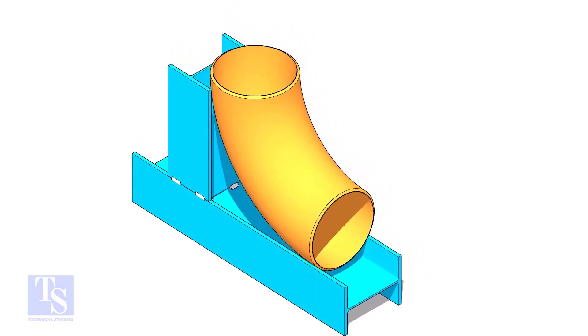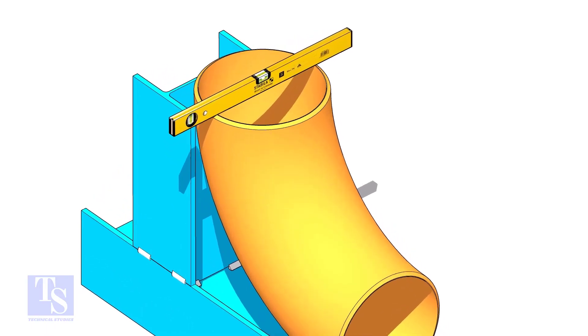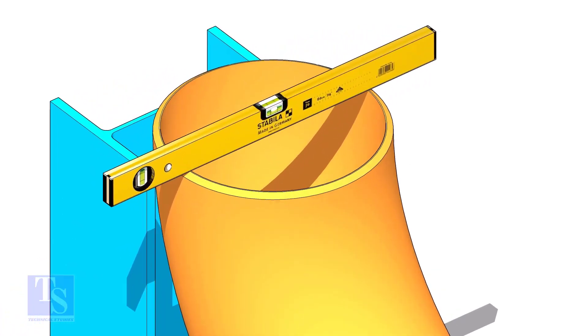Put the elbow in the jig. Level the top face of the elbow on both ways.